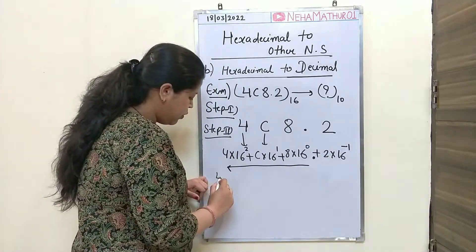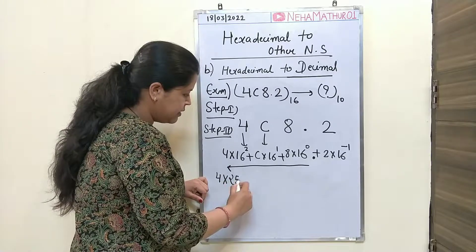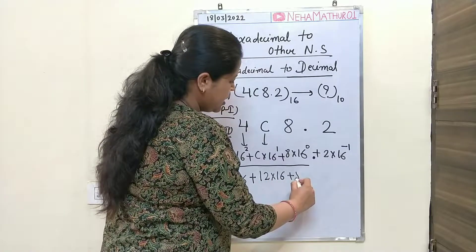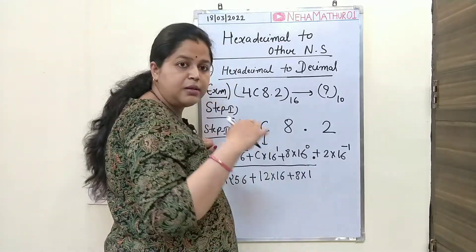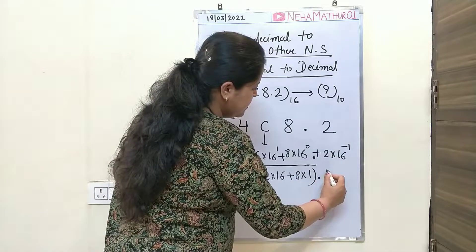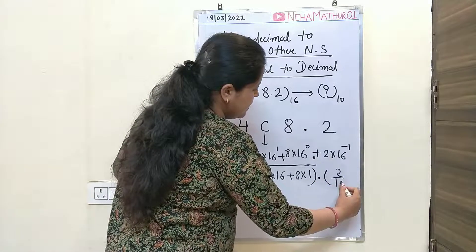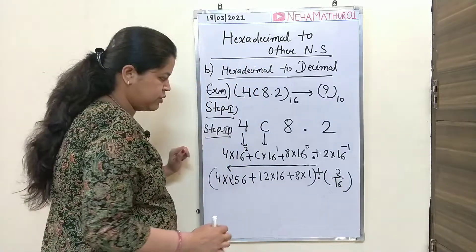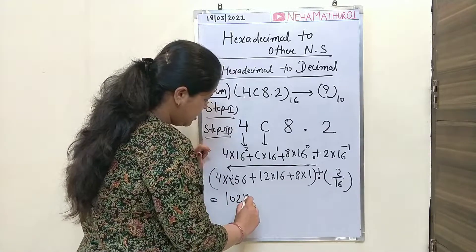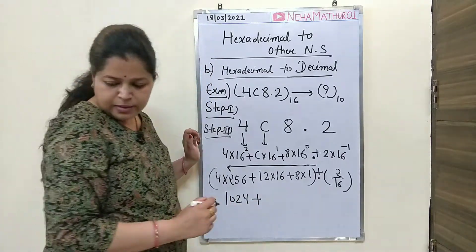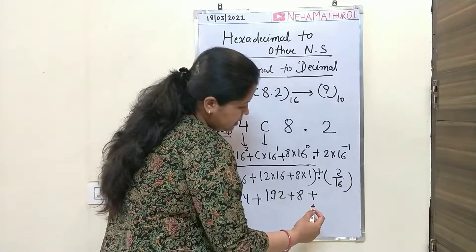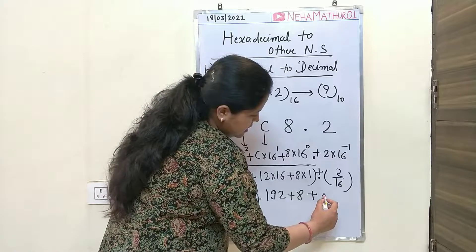So it is 4 multiplied by 16 squared, which means 256 times 4, plus C — which is 12 — multiplied by 16, plus 8 multiplied by 1 because 16 to the power 0 is 1. Then for the fractional part: 0.2 upon 16, which is 2 divided by 16. Adding these: 1024 plus 192 plus 8 plus 2 divided by 16, which gives 0.125.